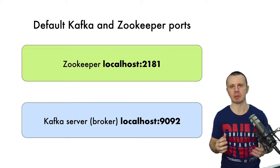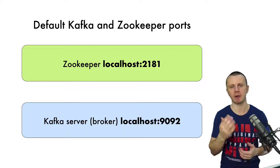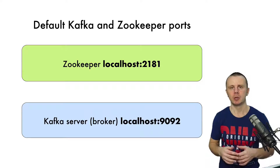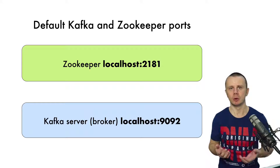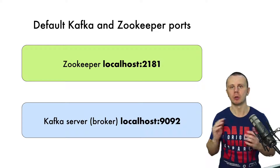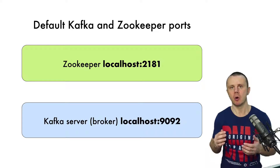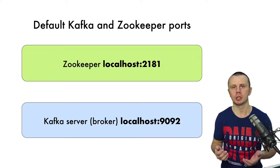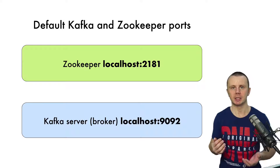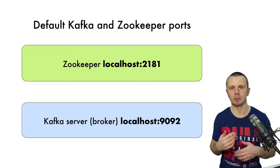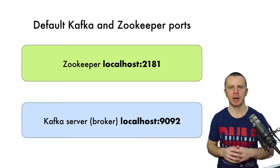The same applies to Kafka brokers — you could use the default port 9092 on all computers, or if you wish, you could adjust it to any custom port you want.